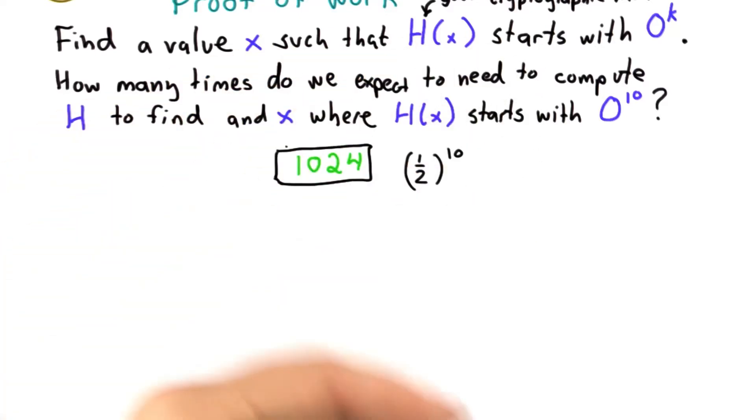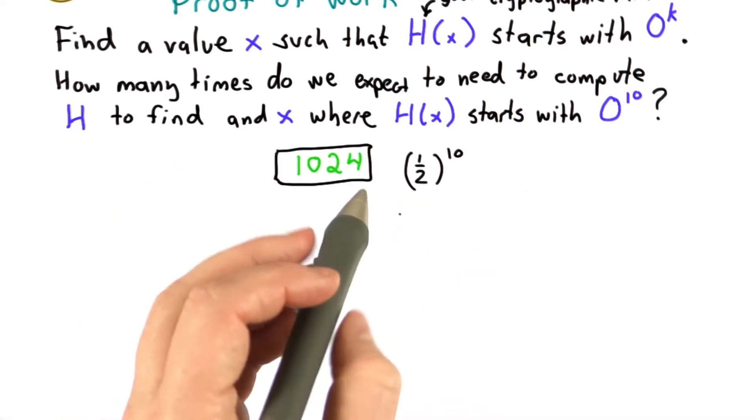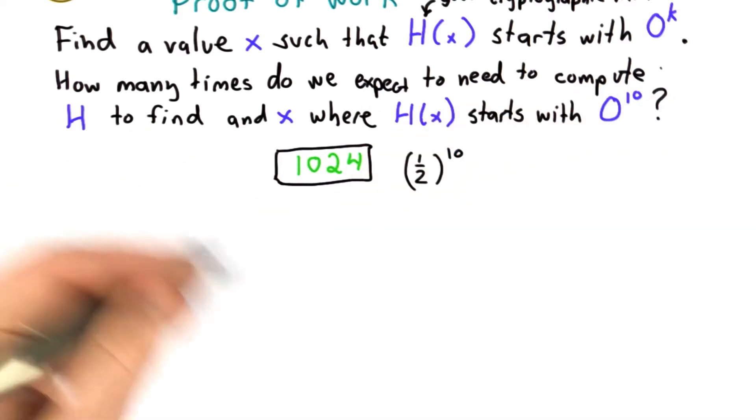That means finding a hash value with certain properties is expected to require an amount of work, and by adjusting those properties we can increase the amount of work. This is what Bitcoin does.